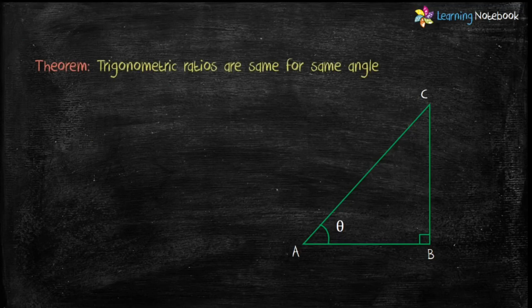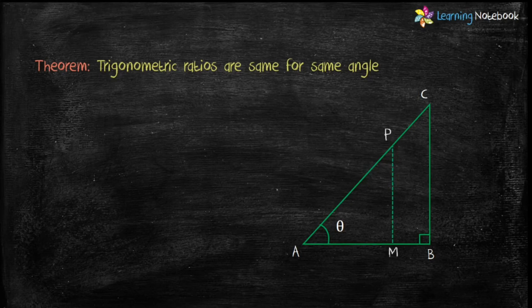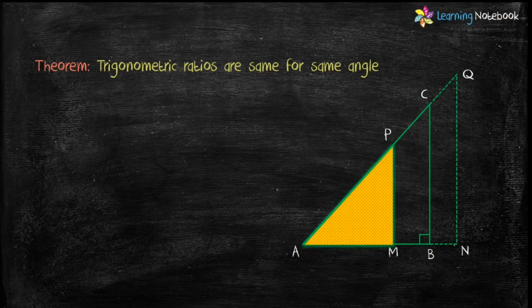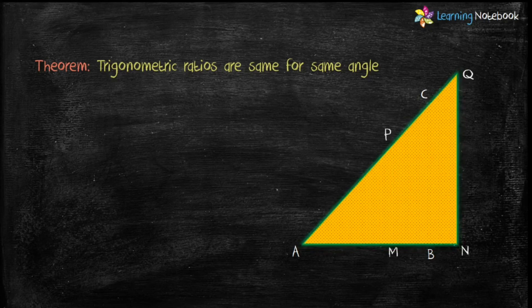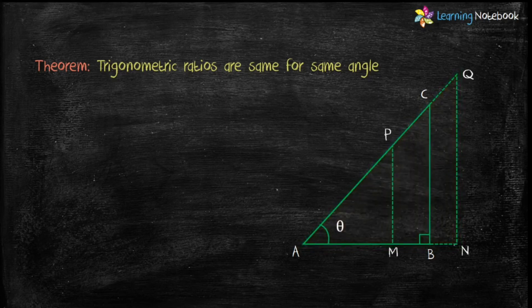Let's do a theorem related to trigonometric ratios. The theorem states that trigonometric ratios are the same for the same angle. In triangle ABC, the trigonometric ratio of acute angle theta remains the same if angle theta remains the same. To understand this, let's draw PM perpendicular to AB and extend triangle ABC such that angle ANQ equals 90 degrees. The theorem says trigonometric ratios of triangle AMP equal those of triangle ABC, which equal those of triangle ANQ, since their angle theta remains the same.